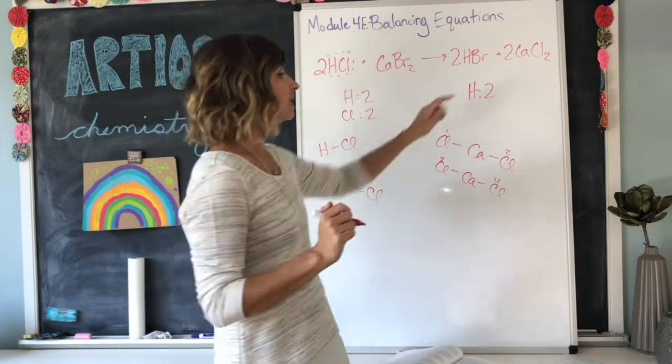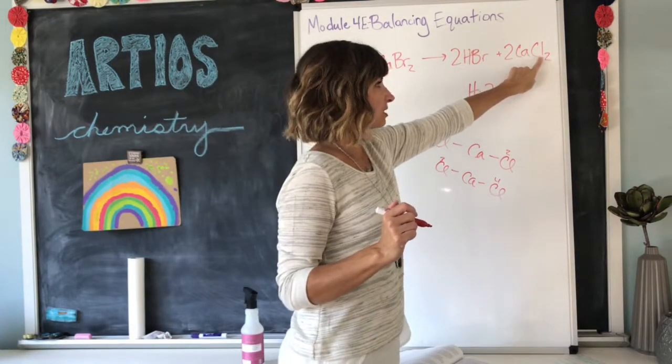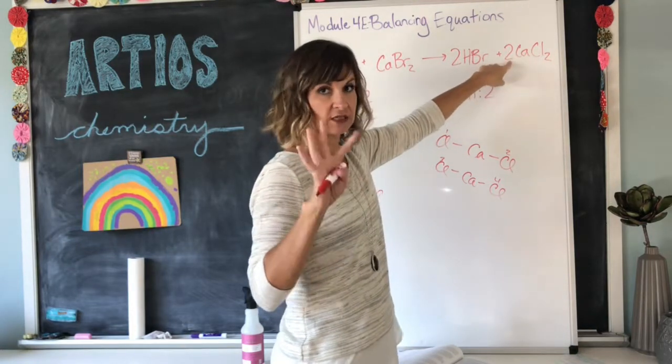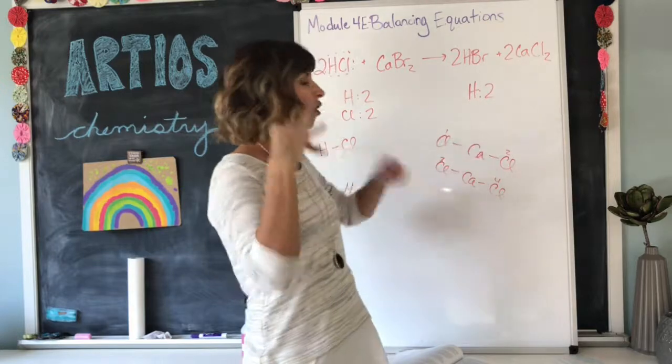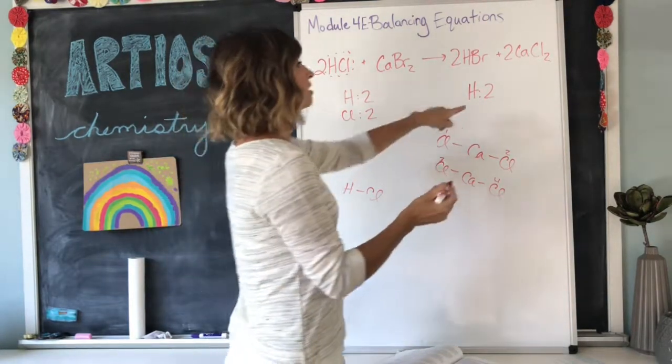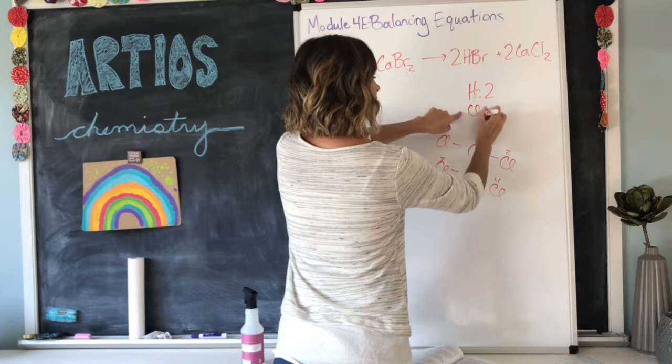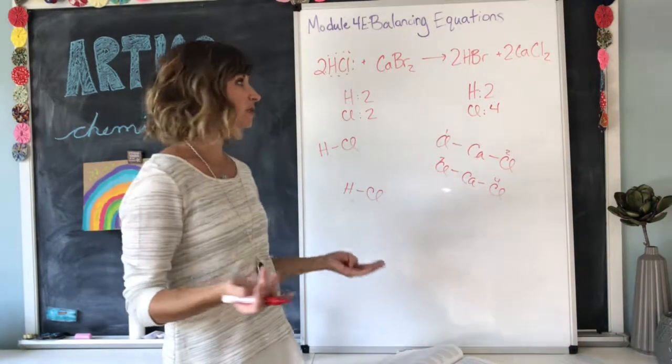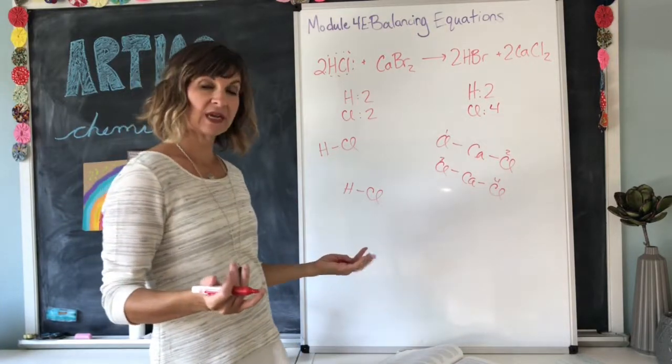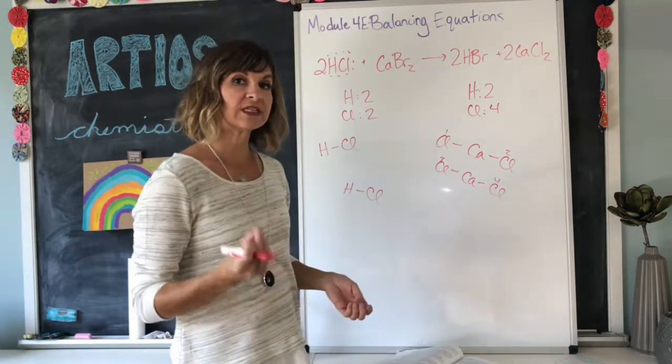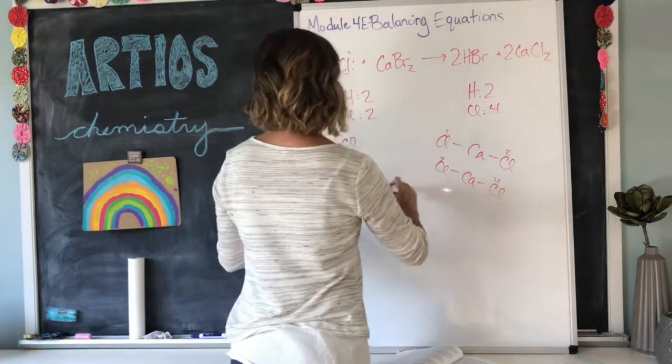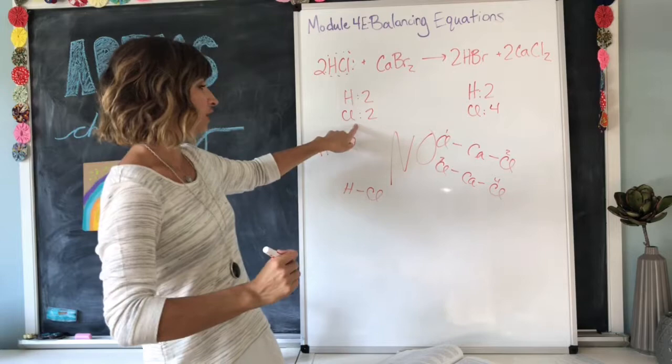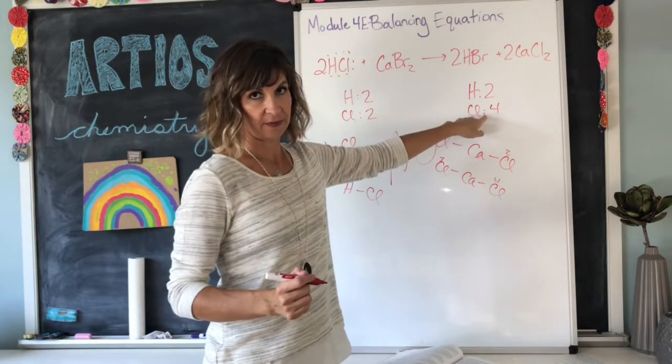Now, the other way that you can do this is you can take the little two, which is a subscript for chlorine, and multiply it by the coefficient. So, two times two is four. Or, picture it in your head and add it up that way. So, over on the product side, we have four chlorines. So, at this point, we don't even have to continue on because the question was, is the equation balanced? The answer is, no, it is not balanced. Because there are two chlorines over here and four over here.